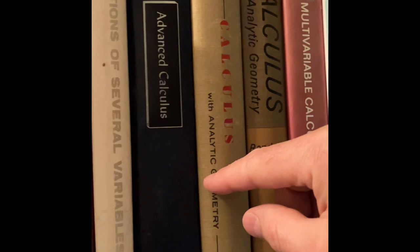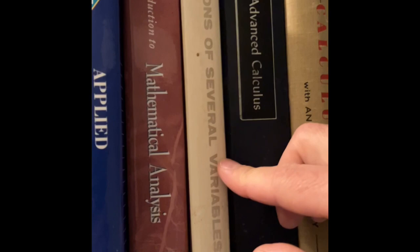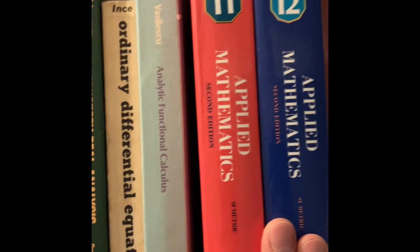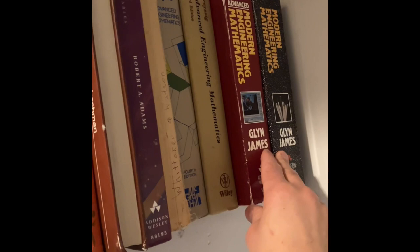We have here Kaplan Calculus, Calculus with analytic geometry, the book by Olmsted as well. Fleming, Functions of Several Variables, Math Analysis here. A couple of high school mathematics down here, and the book that I talked about the other day, Ordinary Differential Equations by Inns.